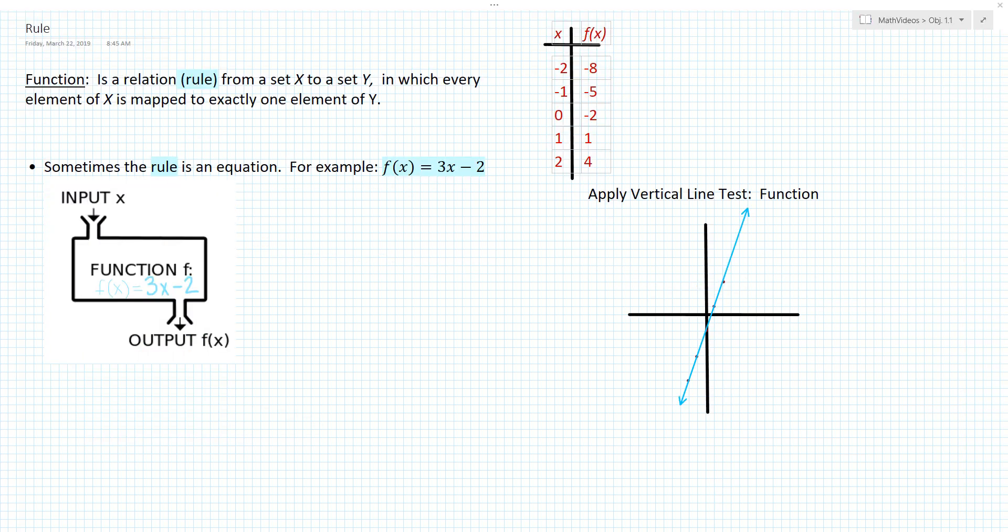Let's start with any input within our domain. Say we start with the input -2 and apply our rule where we triple and then subtract 2, and we get the output -8.